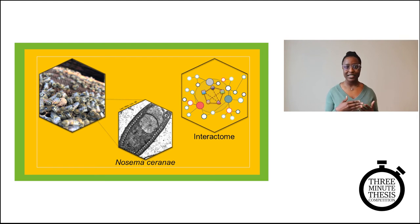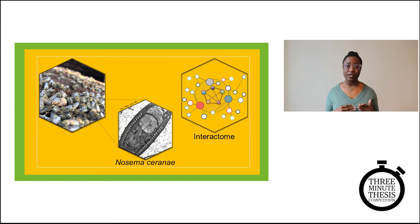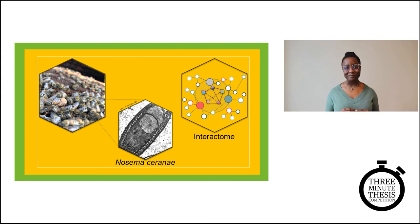I dissected a few honeybee guts from our colonies, then separated out the interacting proteins using a method called chromatography. After this, I identified all the proteins in my sample using a powerful analytical tool called mass spectrometry. Then I used a series of computer-based algorithms to predict which proteins were interacting with which proteins — kind of like assembling pieces of a puzzle together. And with this, I was able to get the first ever peek at the honeybee gut interactome.